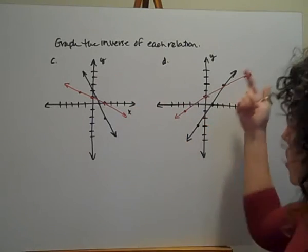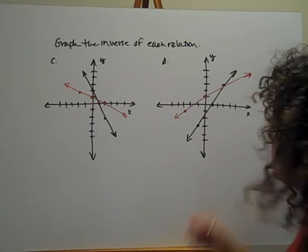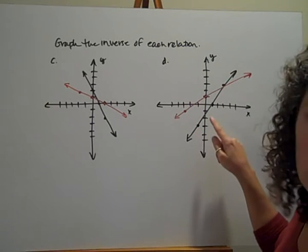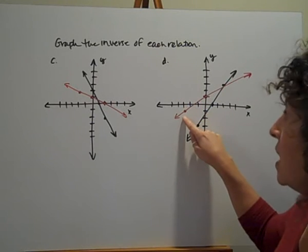And one more. This is our negative slope. Let's take a look at one that has a positive slope. So I'm going to take, again, each point. I've got (-1,-3). So I'm going to graph this as (-3,-1).